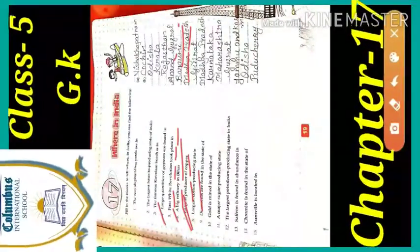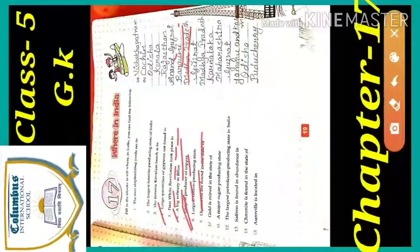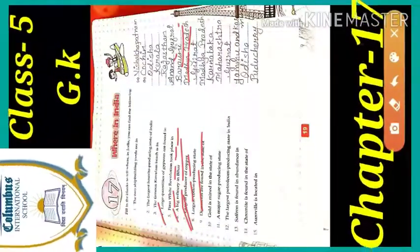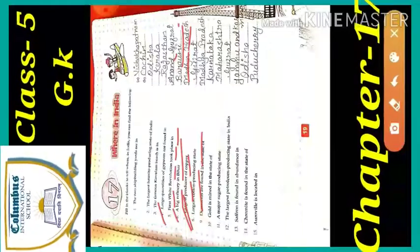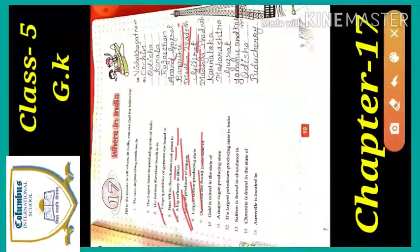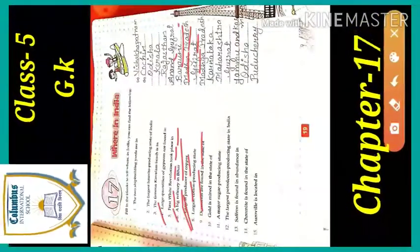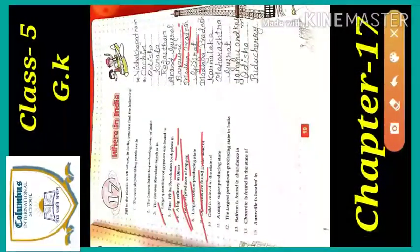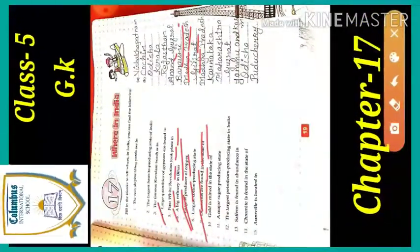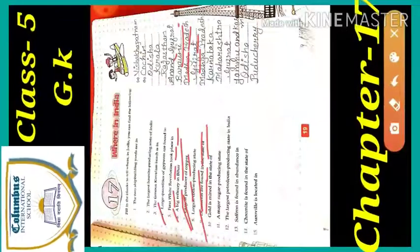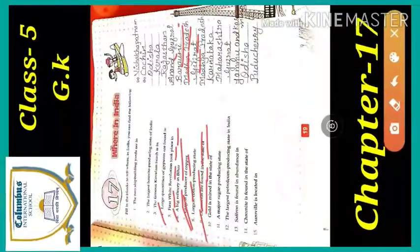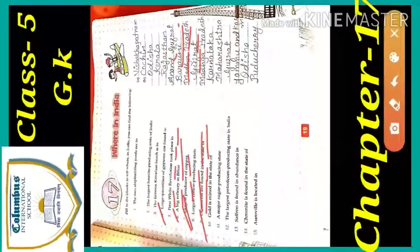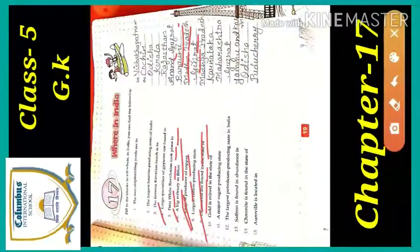The large cotton producing state is Gujarat. Diamonds are found in the state of Madhya Pradesh.